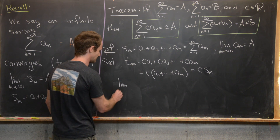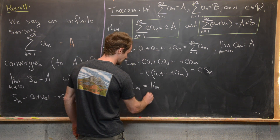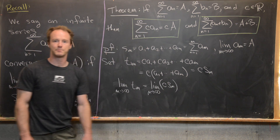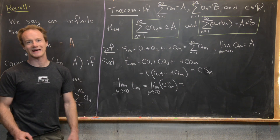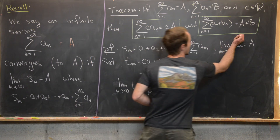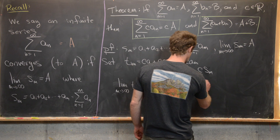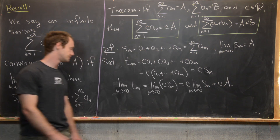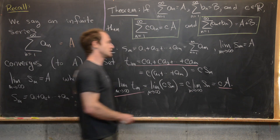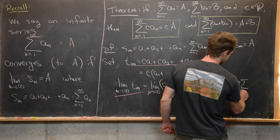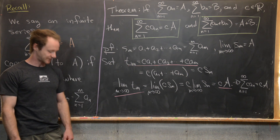Taking the limit as m goes to infinity of t sub m is the same as the limit as m goes to infinity of c times s sub m. From our video on algebraic properties of limits, we can factor c out of the limit. Since s sub m converges to a, this gives c times the limit as m approaches infinity of s sub m, which equals c times a. Using the definition of t sub m and this limit value, we conclude that the sum as n goes from one to infinity of c times a sub n equals c times a, which is exactly what was desired.